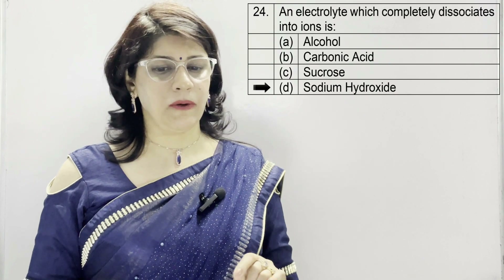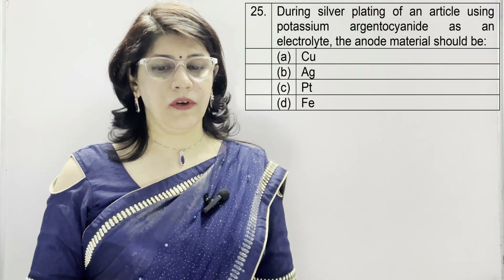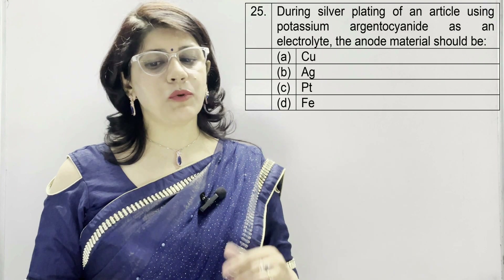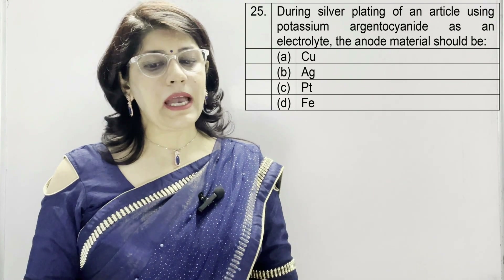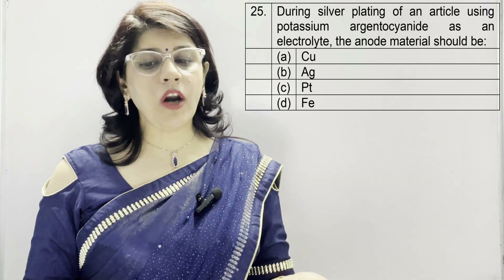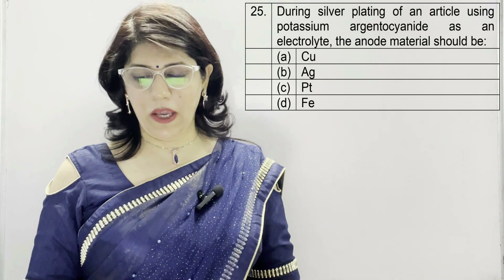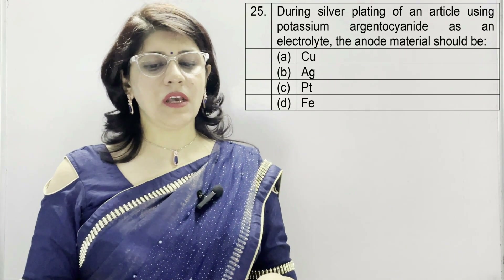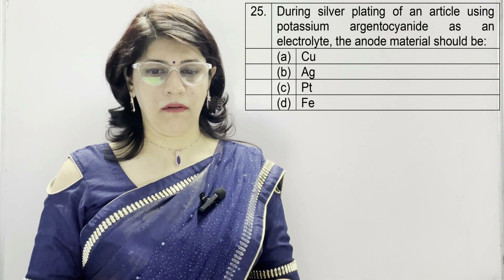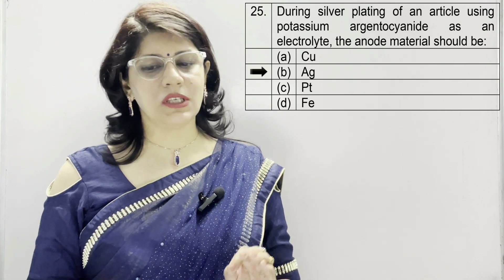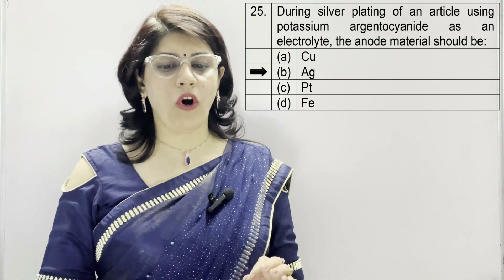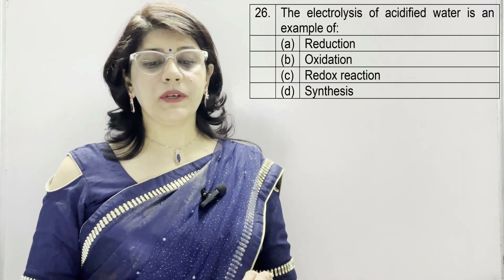In question number 25: during silver plating of an article using potassium argentocyanide as an electrolyte, the anode material should be — A: copper, B: silver, C: platinum, D: iron. The correct option is B — silver. The anode material is made of pure silver.